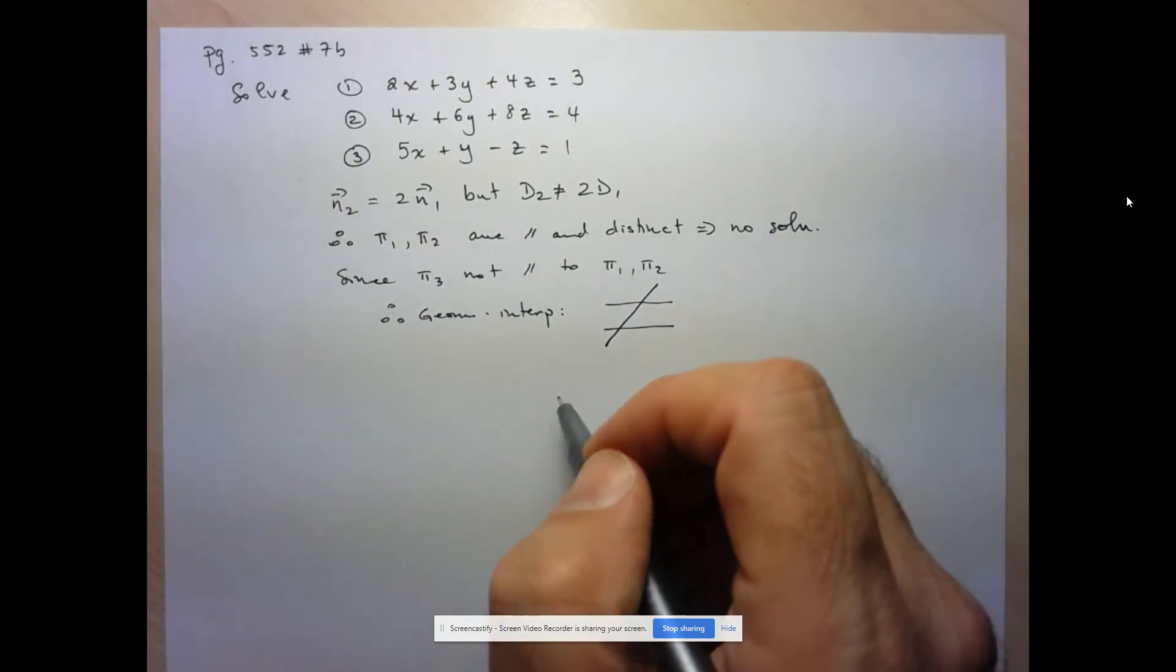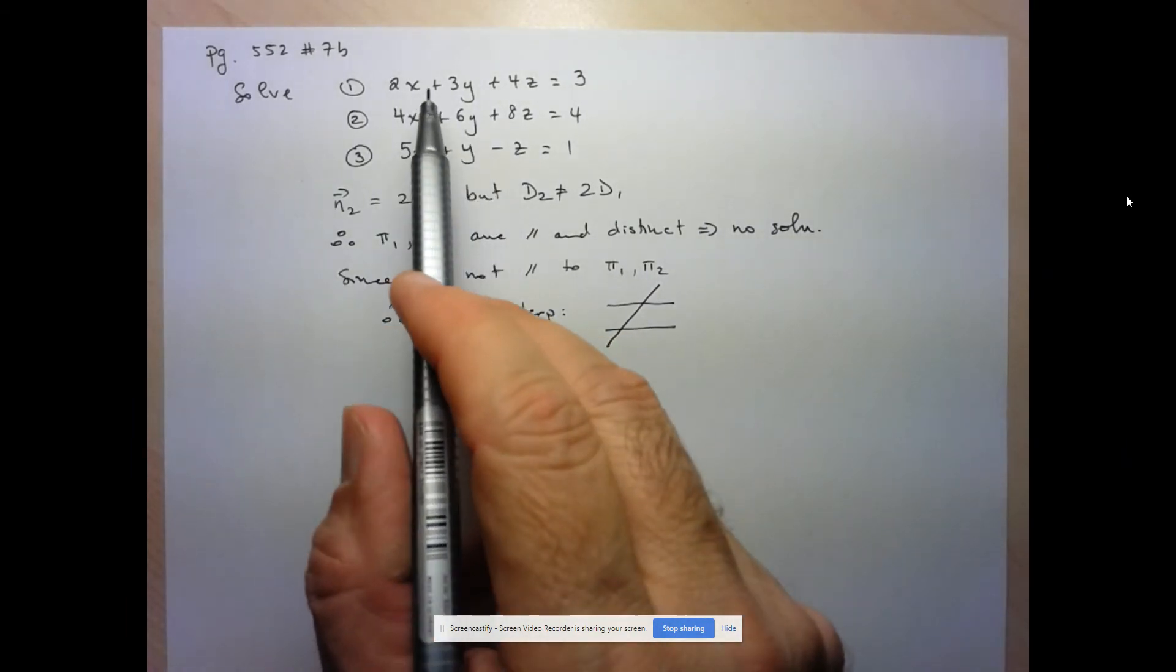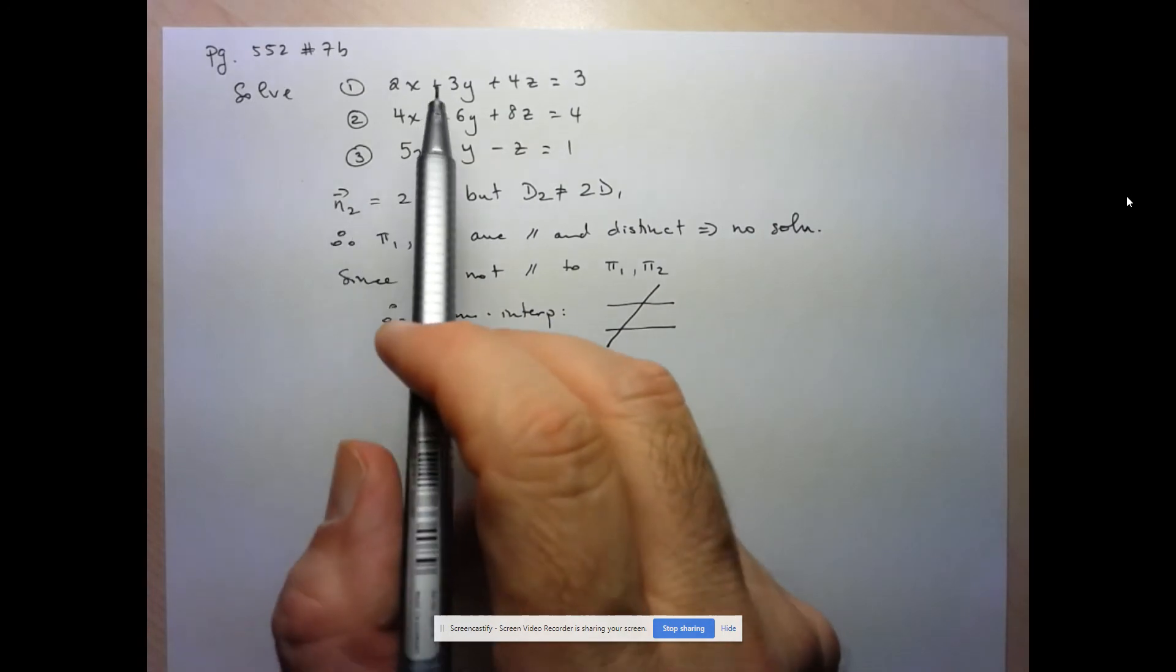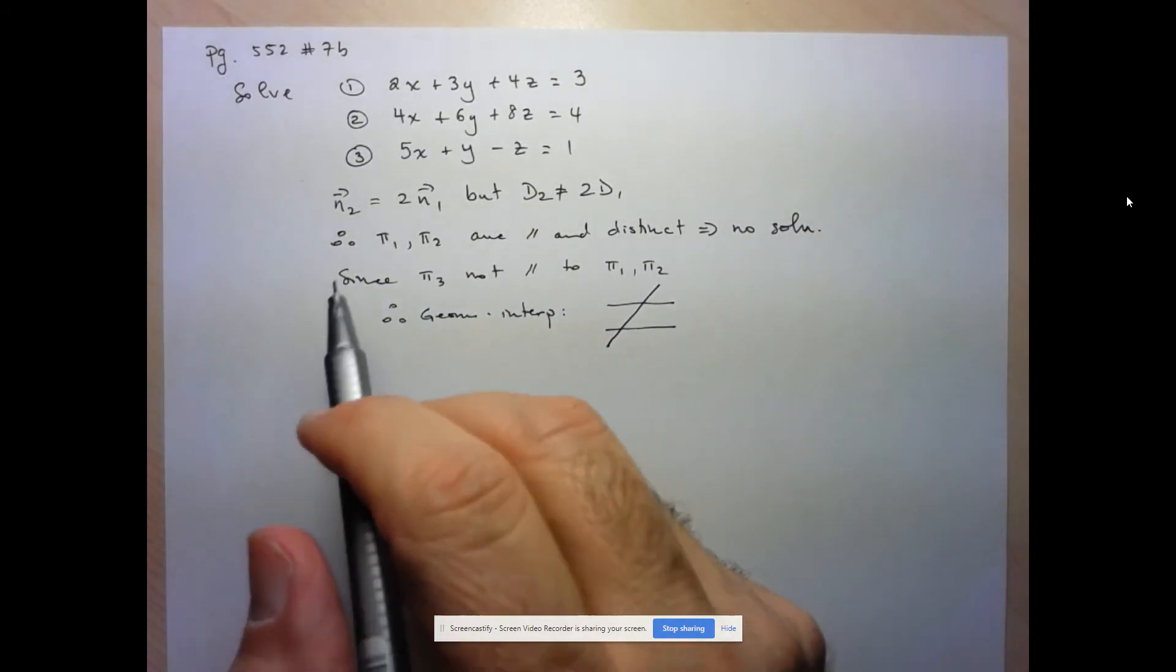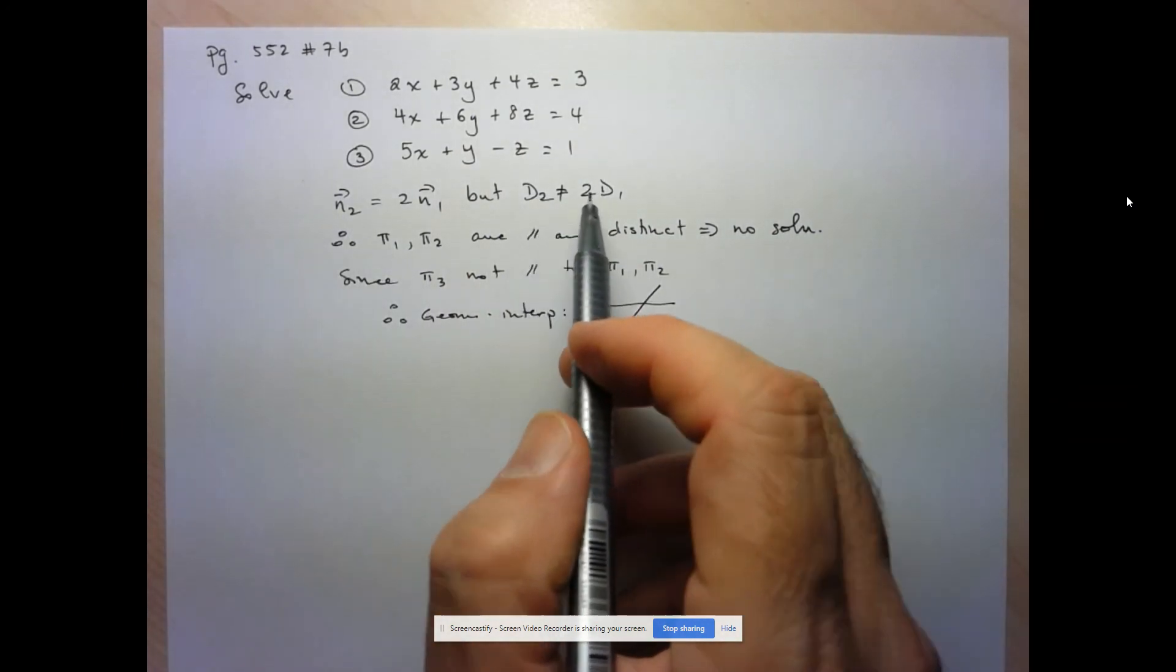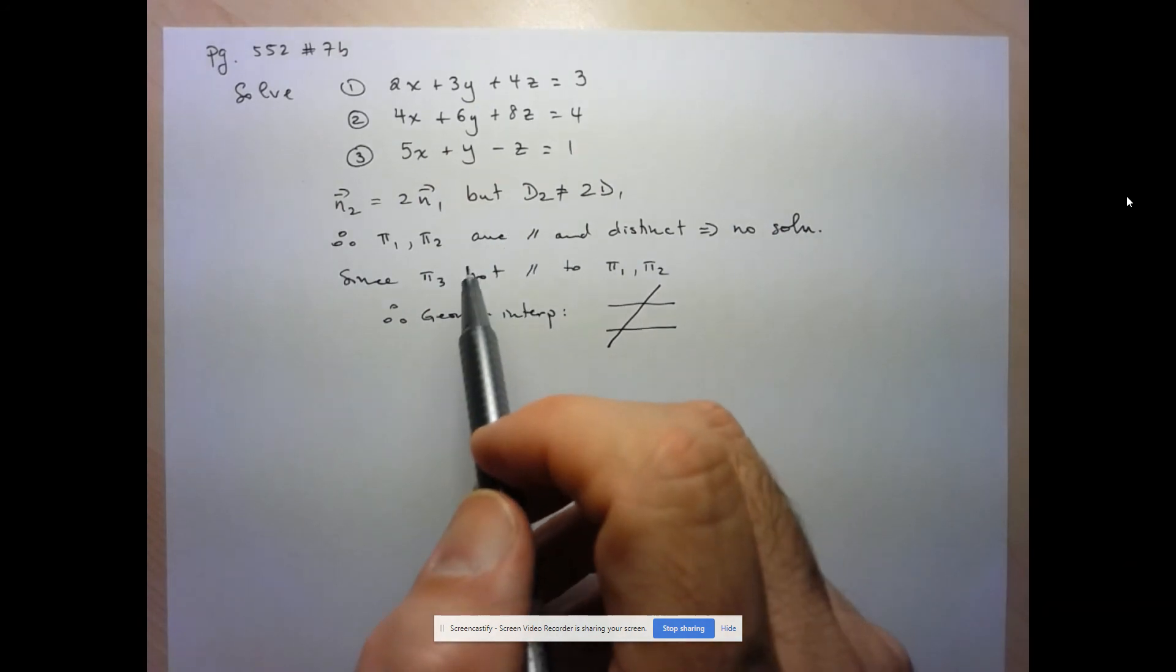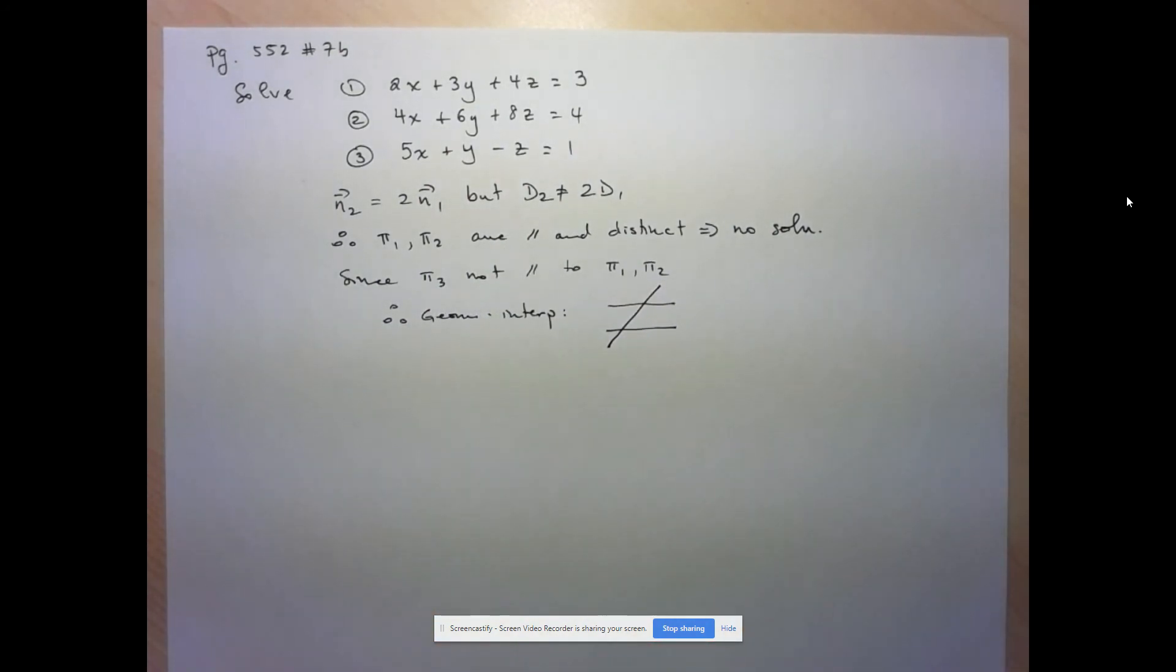But again, there's no point of intersection. So just to recap, notice I didn't really have to do any algebra other than showing that the two normal vectors were scalar multiples of each other, hence parallel, but the d values were not the same scalar multiples of each other, hence we had parallel and distinct planes, hence no solutions. That's it for this one.